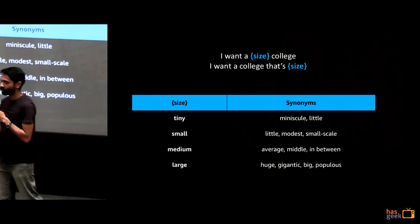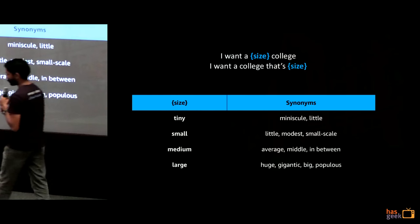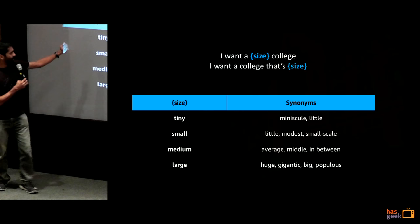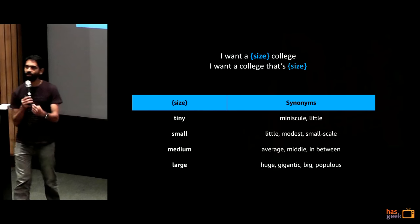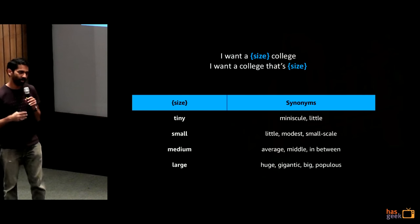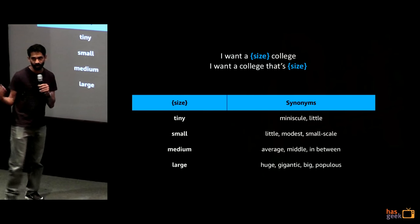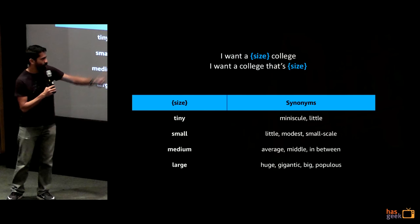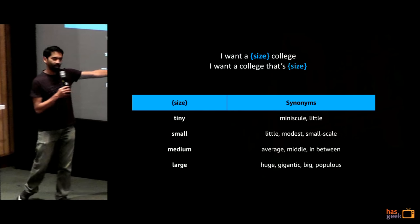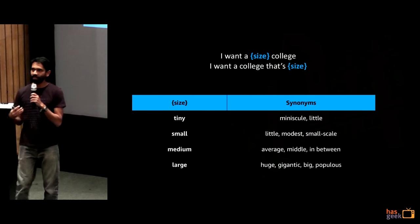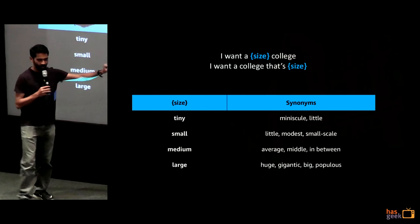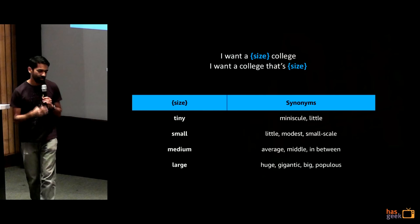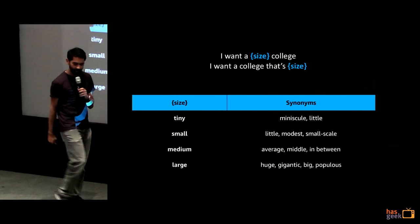Sometimes you'll also want to use synonyms for slot values. If your skill has four slot values for size — tiny, small, medium, large — not all users will use those exact words. Someone might say 'miniscule' or 'little' instead of tiny, 'average' or 'in between' instead of medium. So you need to design your skill to take all of these synonyms as well, being adaptable to what the user is really saying.